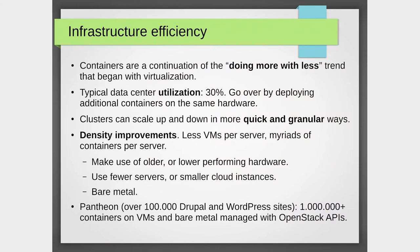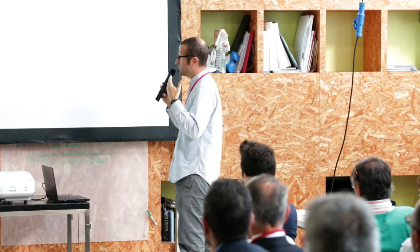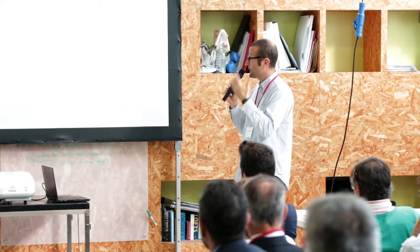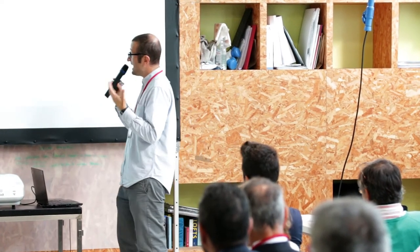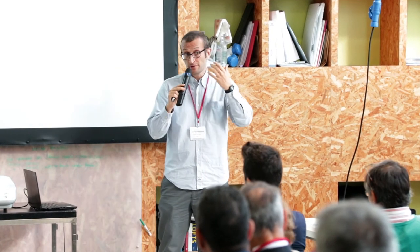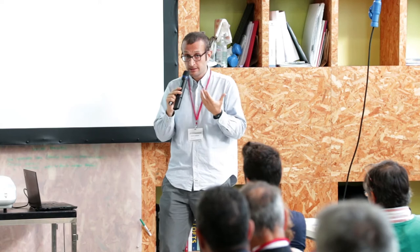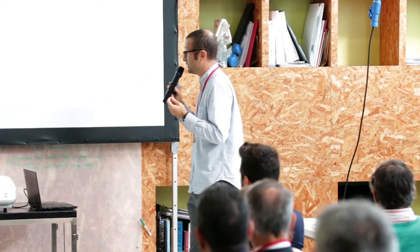People perceive containers as an advantage for application deployment, which is very true and convenient. But in my opinion, the big thing from an OpenStack perspective is to improve utilization. 30% is the usual utilization within data centers — we can do better. With containers, we can quickly and in a granular way scale clusters up and down. There's also the concept of density improvement.